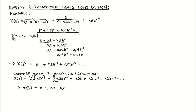Z goes into the first term of the denominator Z to the power minus 1 times. Z to the power minus 1 times the denominator, when subtracted from Z, results in 0.2 plus 0.15 times Z to the power minus 1. Continuing the process, 0.2 times Z to the power minus 2 times the denominator gives the next term, and when subtracted, yields 0.19 times Z to the power minus 1 plus 0.03 times Z to the power minus 2. We repeat this process to get a sufficient number of terms. X of Z is now given by this infinite series, and comparing with the definition of the Z-Transform, the coefficients are the values of the corresponding time domain signal.